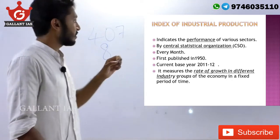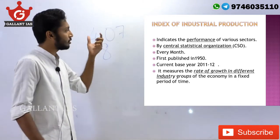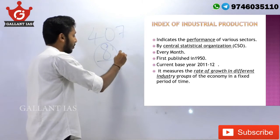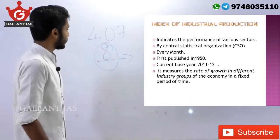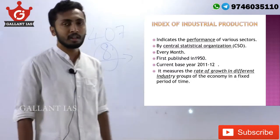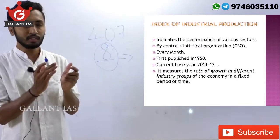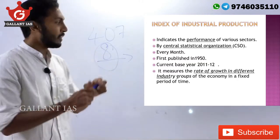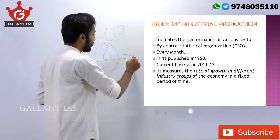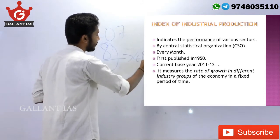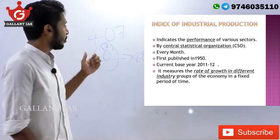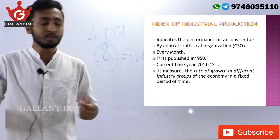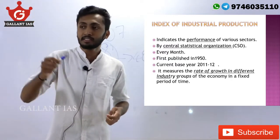These 8 core industries also come under the Index of Industrial Production. The weightage given to these 8 core industries under the IIP is around 40%, which shows the importance and relevance of these 8 core industries in our economy.